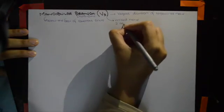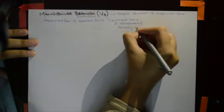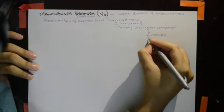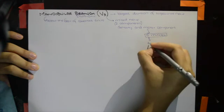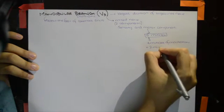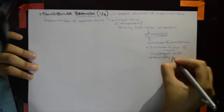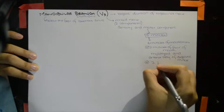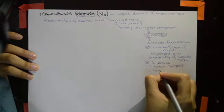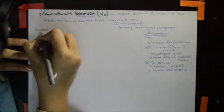The mandibular division has two components: sensory and motor. In the motor component, there are eight muscles total — four are the muscles of mastication, plus two muscles of the floor of the mouth: mylohyoid and the anterior belly of the digastric muscle, plus two tensors: tensor tympani and tensor veli palatini.